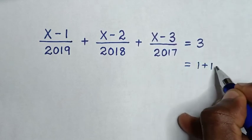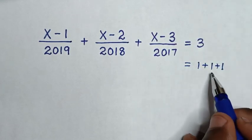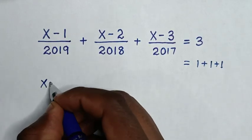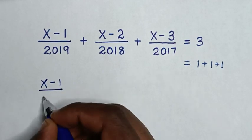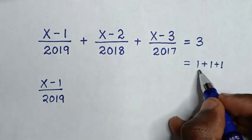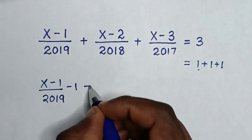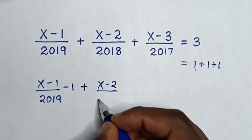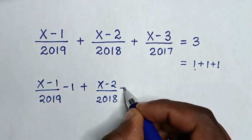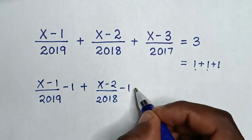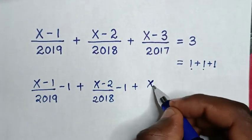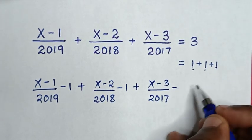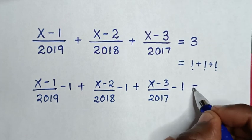So we take this 1 plus 1 plus 1 to the left side. It will be (x minus 1) over 2019 minus 1, plus (x minus 2) over 2018 minus 1, plus (x minus 3) over 2017 minus 1, is equal to 0.